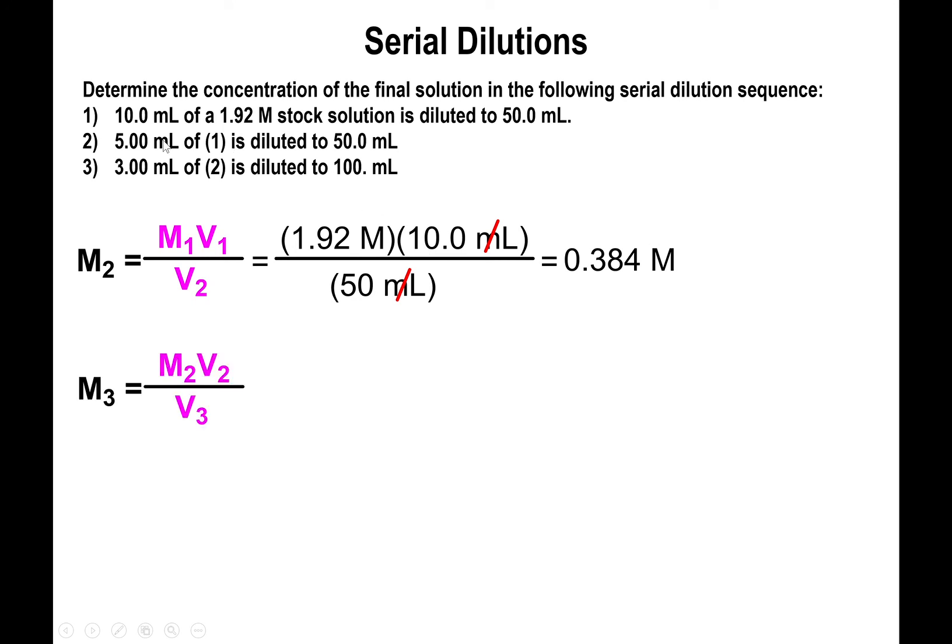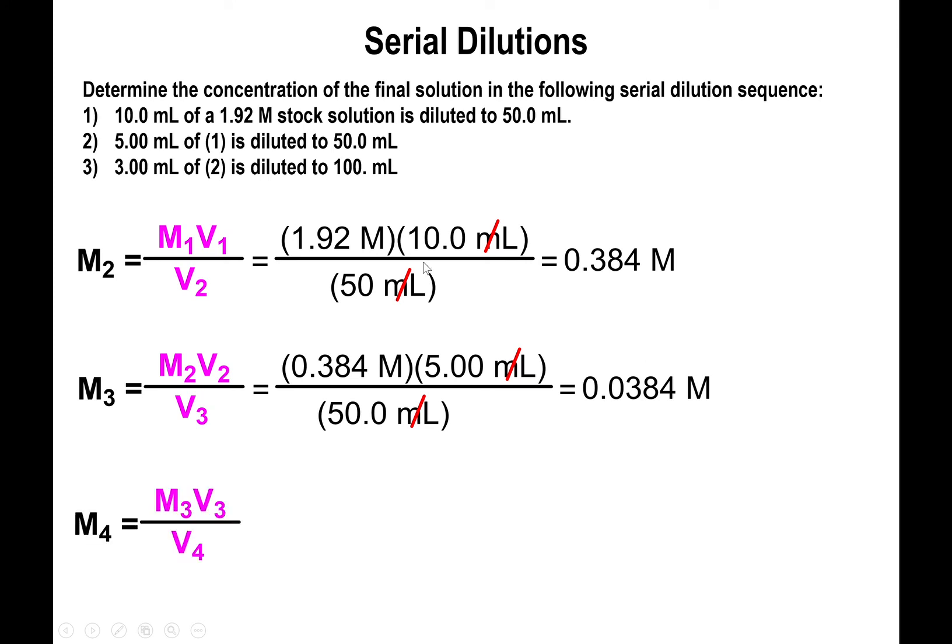But then we take 5 mL of that solution and dilute that to 50. So now the new initial molarity is the one we just calculated, the 0.384, which has to be multiplied by the 5 mL that we're using, and divided by 50, since we're diluting to 50 mL, yielding the new concentration. Finally, 3 mL of this second concentration are diluted to 100 mL. We're going to multiply the 0.0384 by the 3 mL initial divided by the 100 mL, and then this yields the final concentration at the end of the three events.